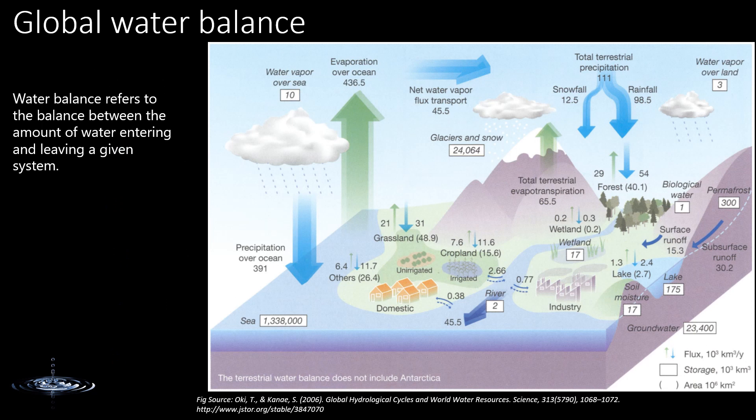Now let's look at the global water balance. Water balance refers to the balance between the amount of water entering and leaving a given system. If you look at Earth as a whole from space, there is no water entering and leaving the system. But within the Earth, there is movement of water — we can see where and how the water is moving — and that defines the global water balance.